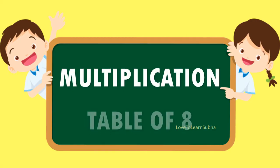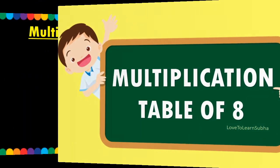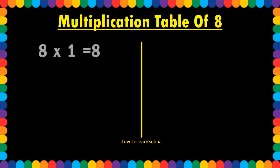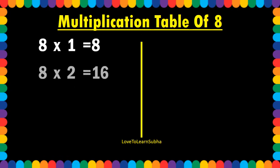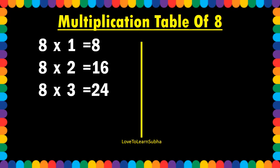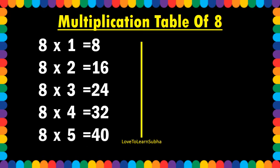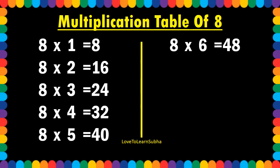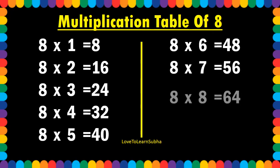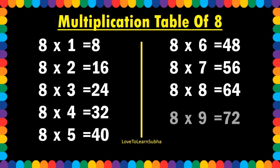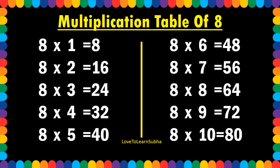Multiplication table of 8. 8 1s are 8. 8 2s are 16. 8 3s are 24. 8 4s are 32. 8 5s are 40. 8 6s are 48. 8 7s are 56. 8 8s are 64. 8 9s are 72. 8 10s are 80.